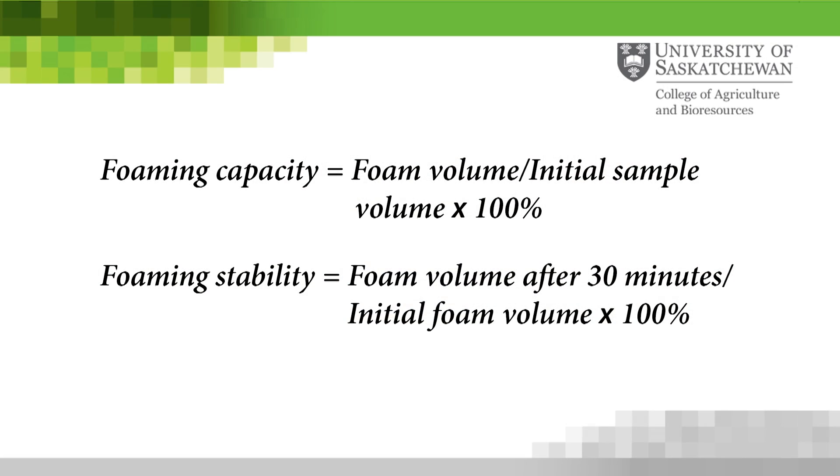Foaming capacity is calculated by dividing the foam volume by the initial sample volume, multiplied by 100%. Foaming stability is calculated as the foam volume remaining after 30 minutes, divided by the initial foam volume, multiplied by 100%.